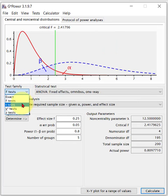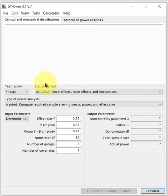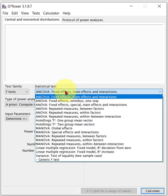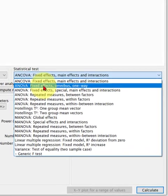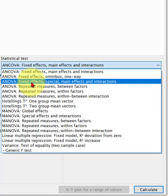Let's pull this up. Again, we stay in F-Tests, because the ANOVA is an F-Test. And we go down to not fixed effects, right here, the one that says interactions in it. So the ANOVA, fixed effects, special, main effects, and interactions.